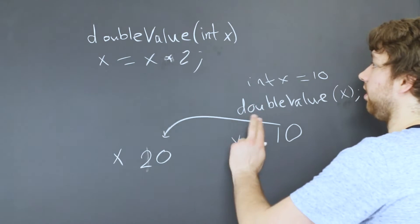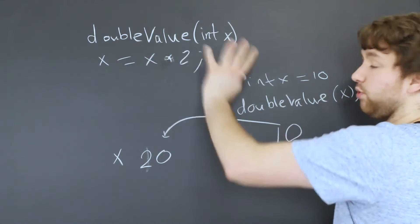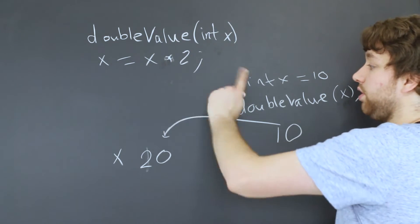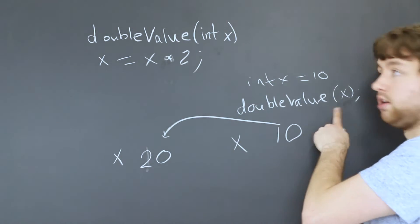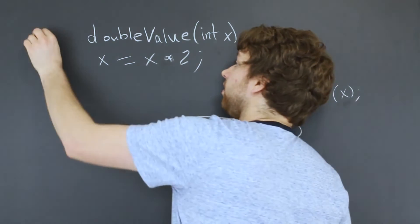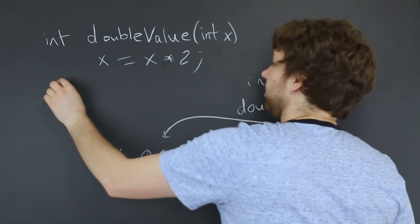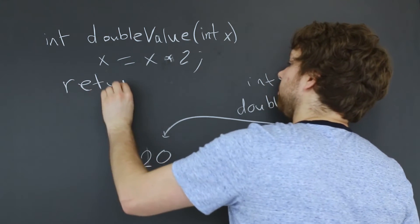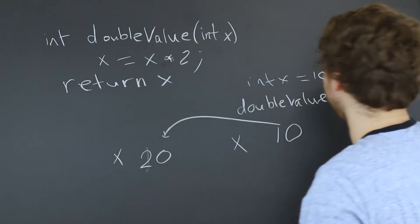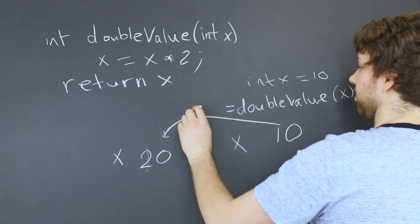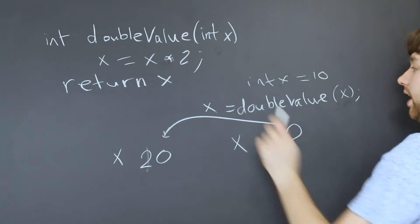So for example, if in this situation, before we go into pointers, if we actually wanted to change the value of x here, we would have to return an integer and then we would have to return x and then we would have to assign that return value to x again.